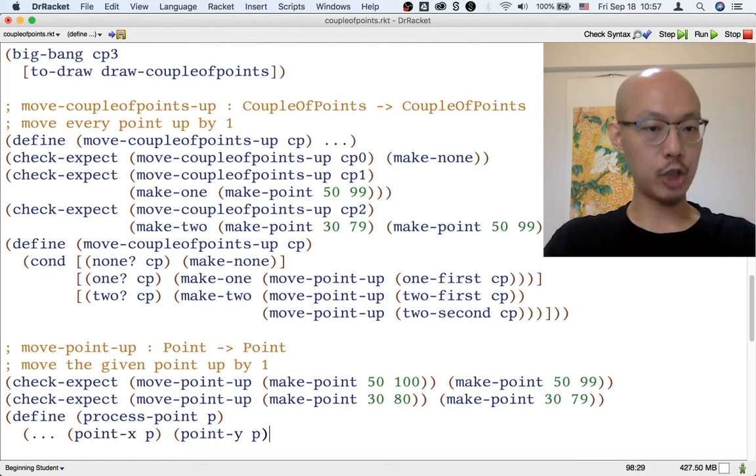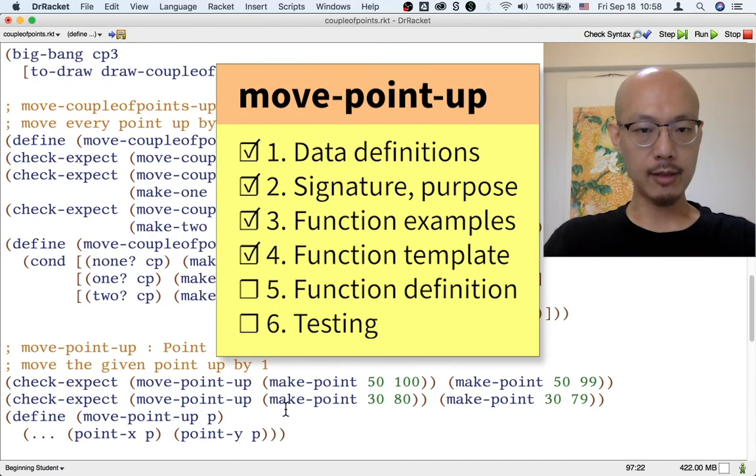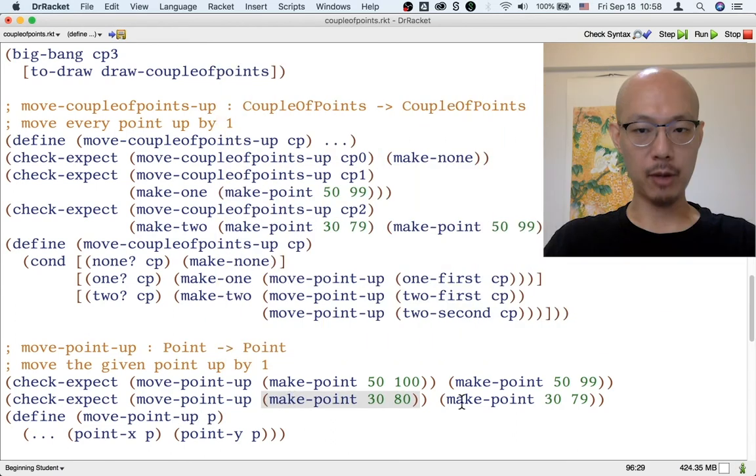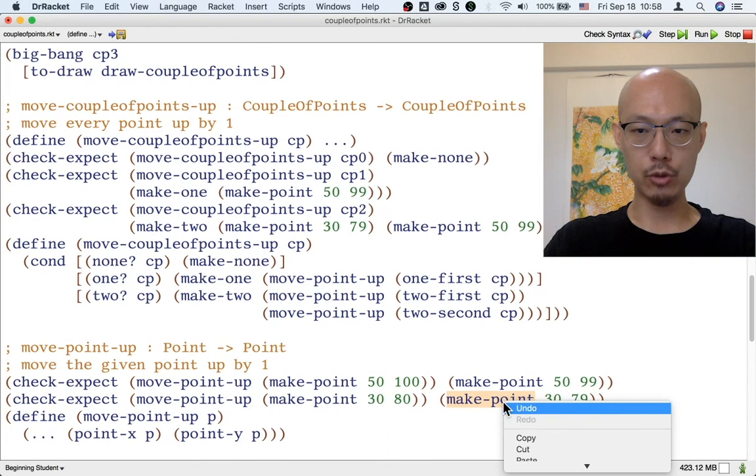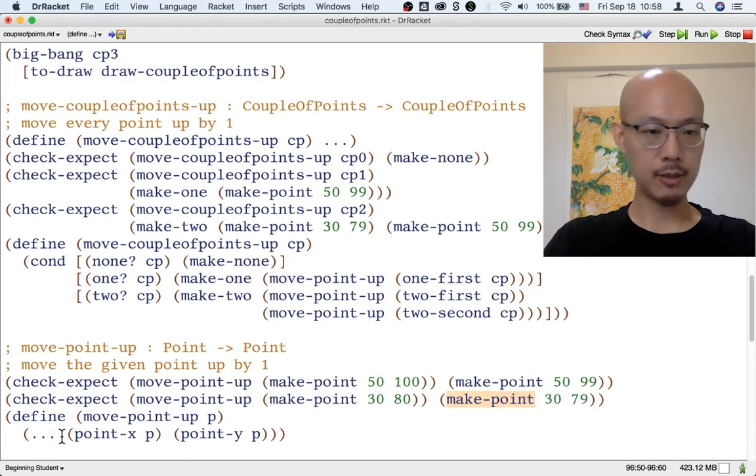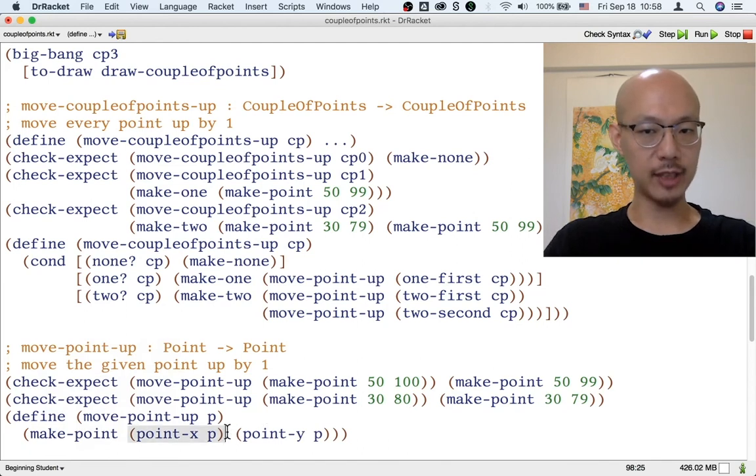And we're going to change the template so that it has the correct function name. And then we can notice from our examples that we need to use make point. So I'm going to put make point here. Although we can simply reuse the x of the input. So for example, 50 becomes 50 and 30 becomes 30. We can't just use the same y as the input. 100 is not the correct y for the output. Instead, we have to subtract 1 from y.